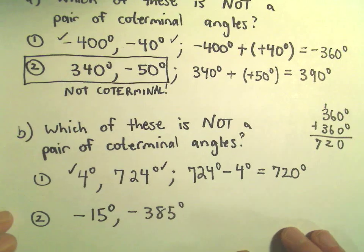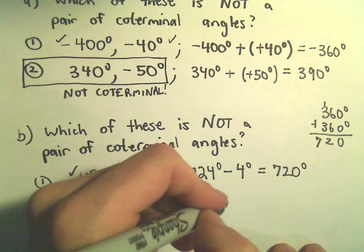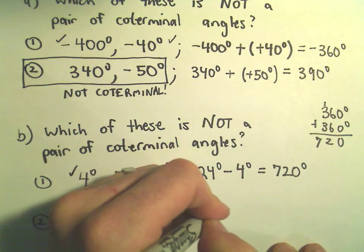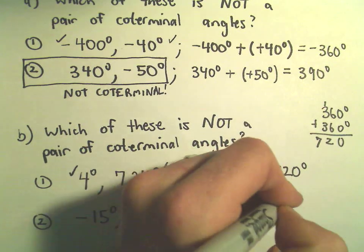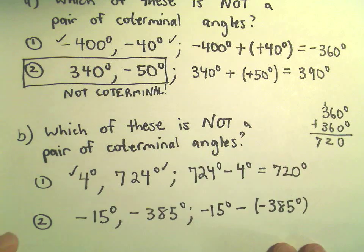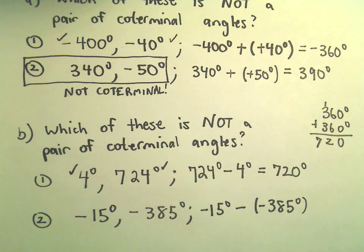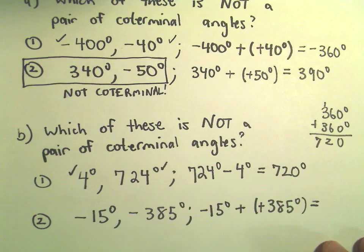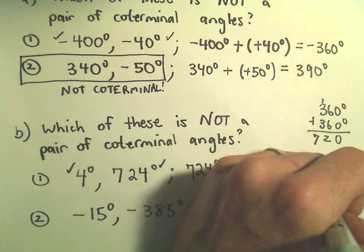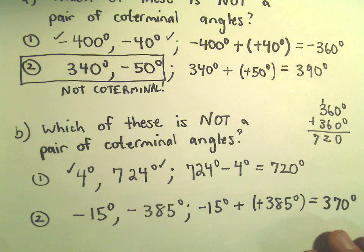Let's check the other one. If we do negative 15 degrees minus negative 385 degrees, that's negative 15 plus 385, which gives us positive 370 degrees.